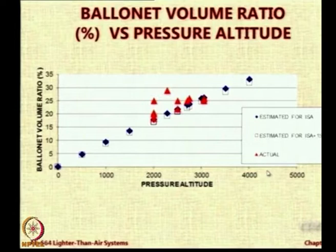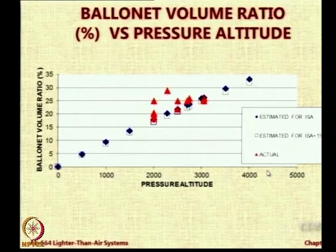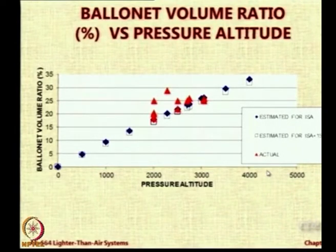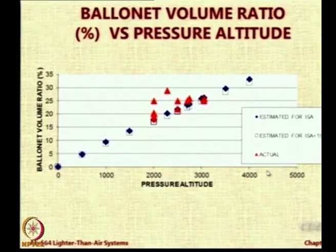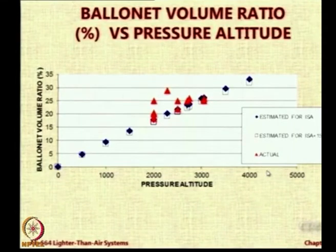The red triangles are the points corresponding to the actual ballonet volume ratio as published in reports versus their pressure altitudes. The blue dots and open rectangles are mathematical estimates using our formulae for the ballonet percentage needed with altitude — for either ISA conditions or ISA plus 15 conditions. We notice that the numerical value of ballonet needed is not too high for ISA plus 15, meaning temperature does not play that much of a role. It is the altitude which plays the major role because of pressure loss, and some red dots have higher values than what we need.